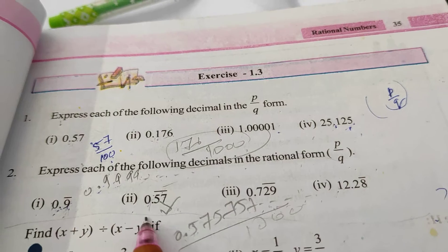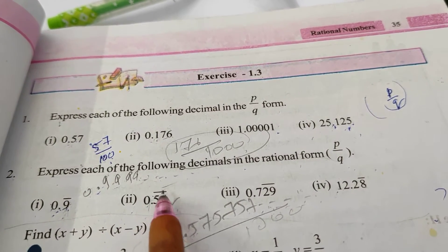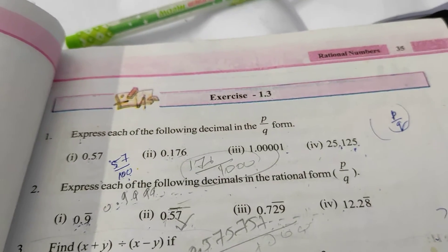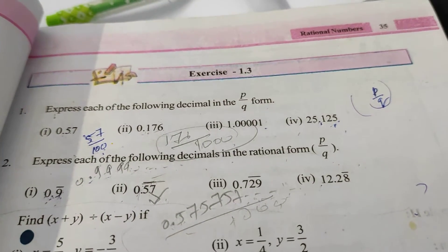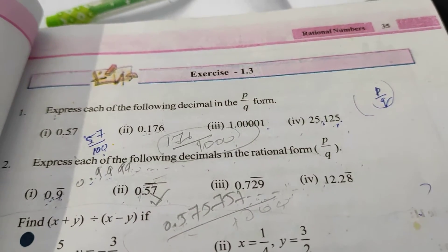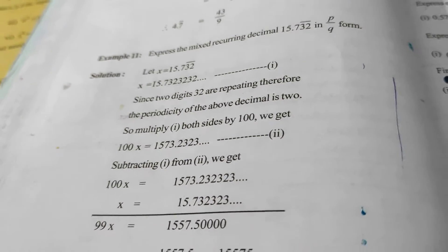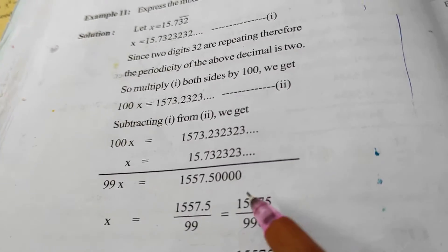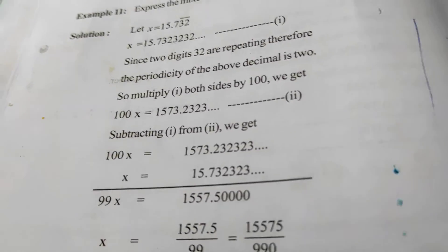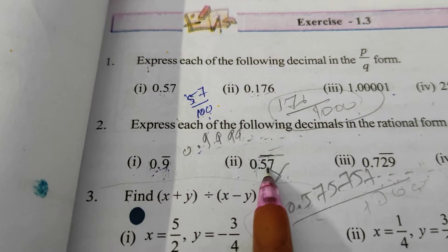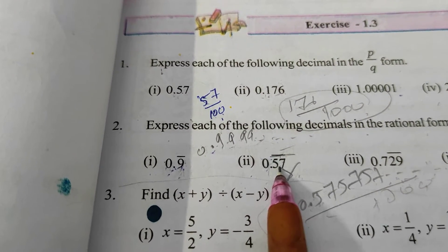What about 0.57 bar? Bar is there. Bar means it is a repeated number. We cannot say how many numbers are after the decimal, so we cannot write it directly in the form of P by Q. There is a process for this. With the help of example 11, we can convert any bar decimal into P by Q form.